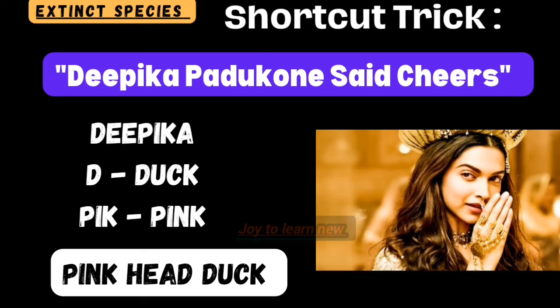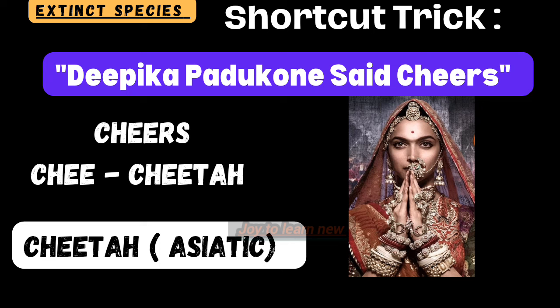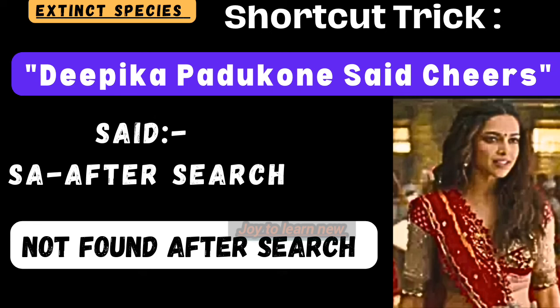Extinct species. The shortcut is: 'Deepika Padukone said cheers.' D in Deepika represents duck, PIK represents pink — pink-headed duck. Cheers — C-H-E represents cheetah — Asiatic cheetah. Set — S-A stands for after search. The definition: extinct species is not found after search. Examples are Asiatic cheetah and pink-headed duck.